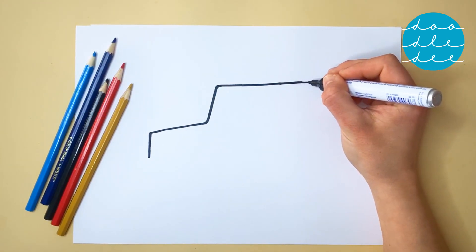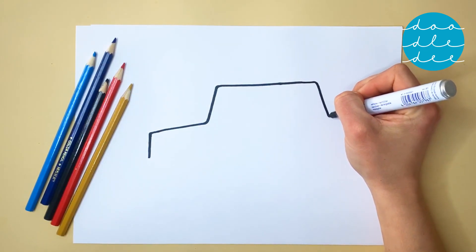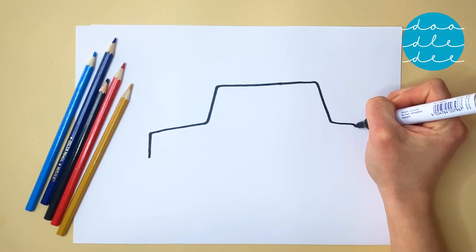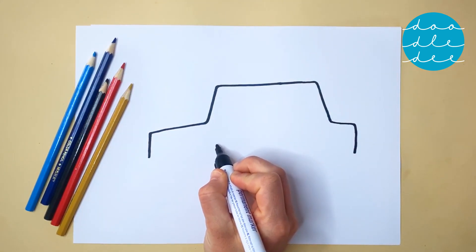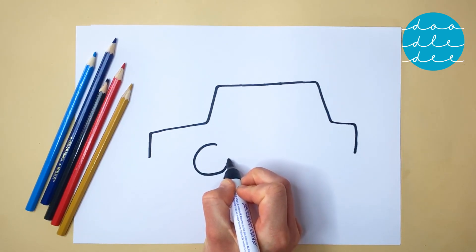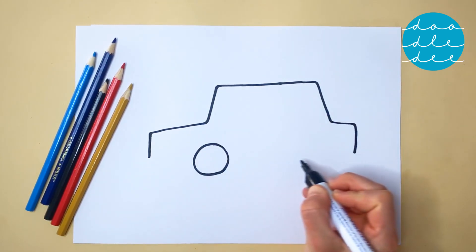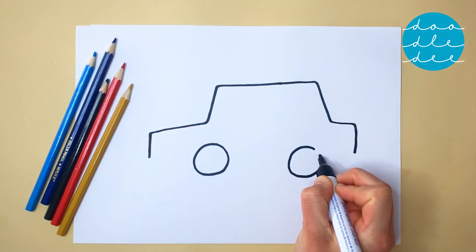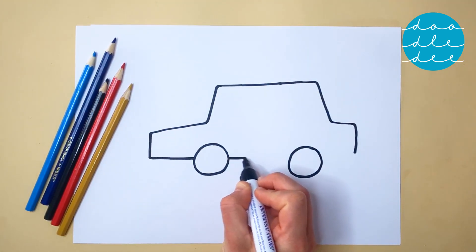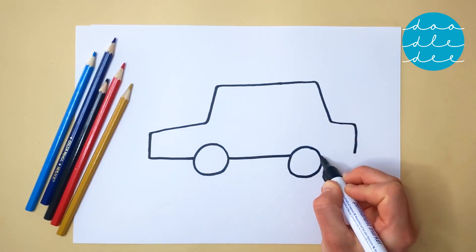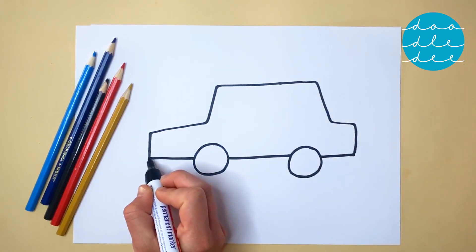Draw a line down, and across, and down again. A circle makes a wheel. Draw another for the second wheel. And then a long line across the bottom, but not over the wheels.